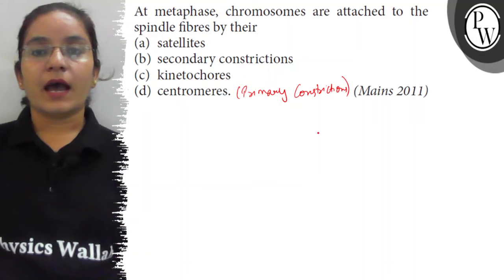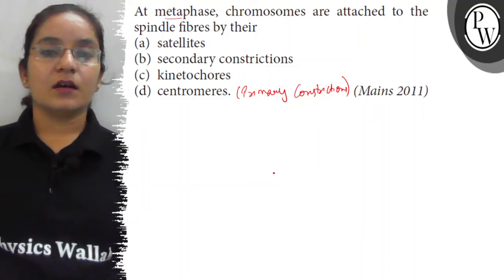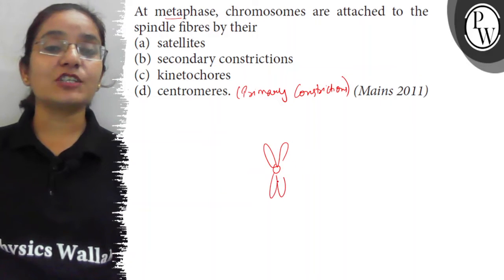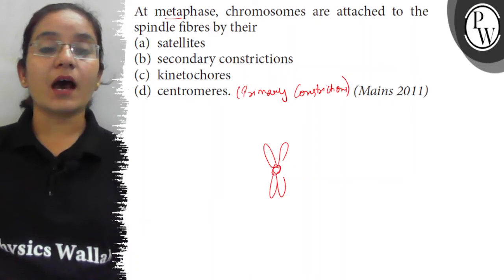Now during metaphase, the chromosomes all get aligned themselves in an equatorial plate in a cell, and they are attached to the spindle fiber via kinetochore centromere.